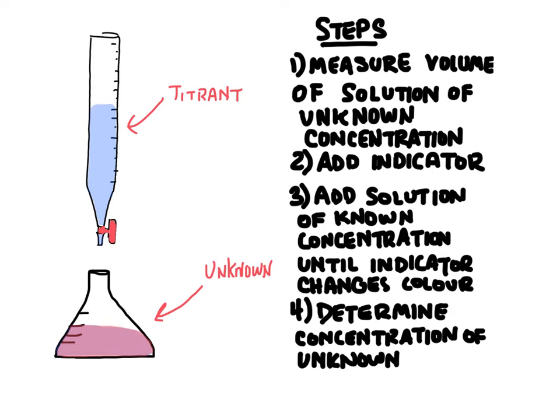So during a titration, we're trying to find the concentration of this stuff right here, the unknown. In the acid-base titration that we talked about before, this would be the acid. We measure concentrations in molarity and we use the symbol capital M. So when you see this one, we're talking about concentration.